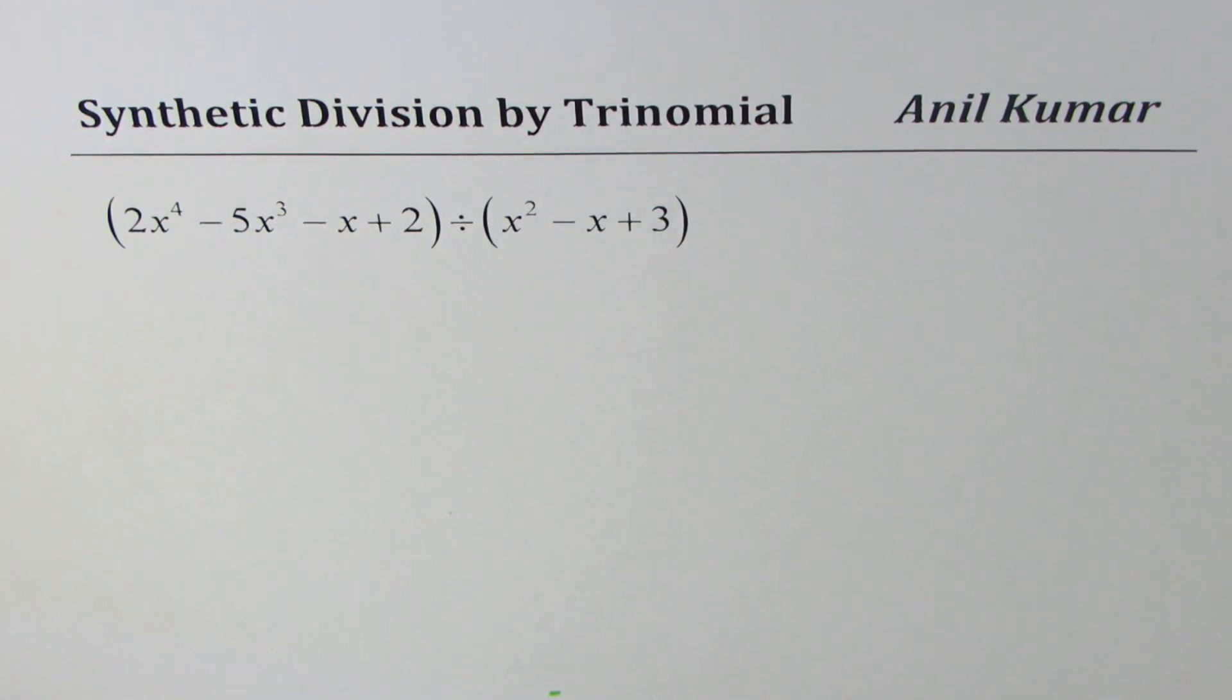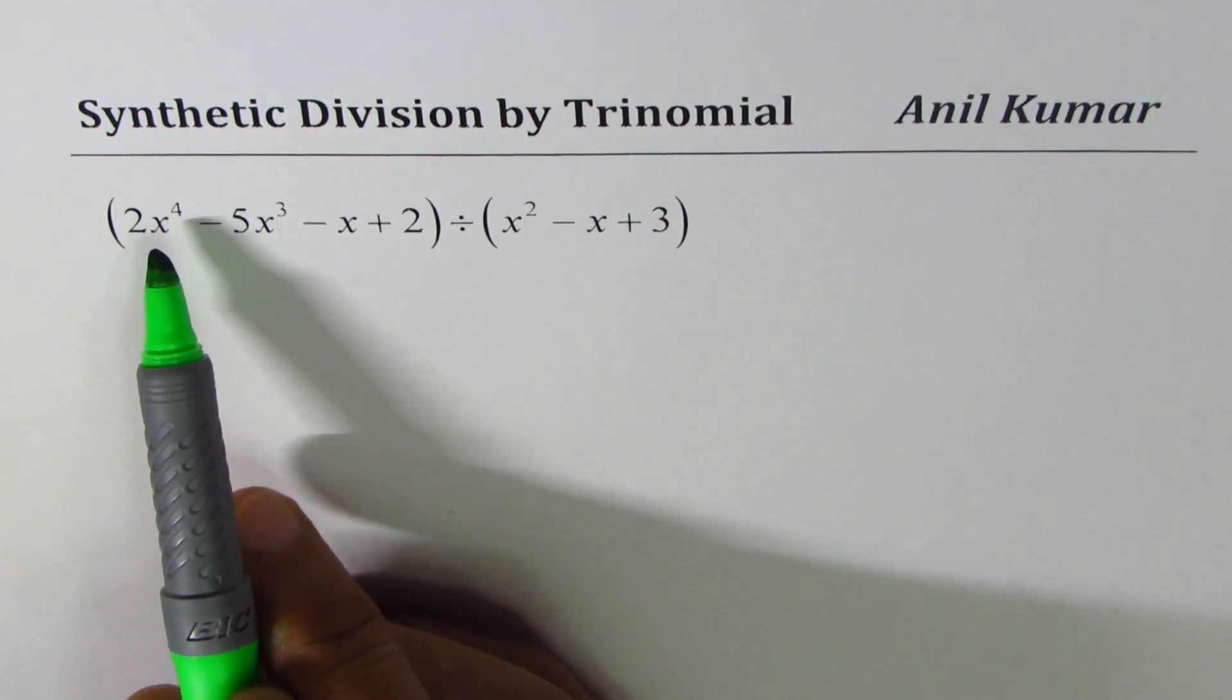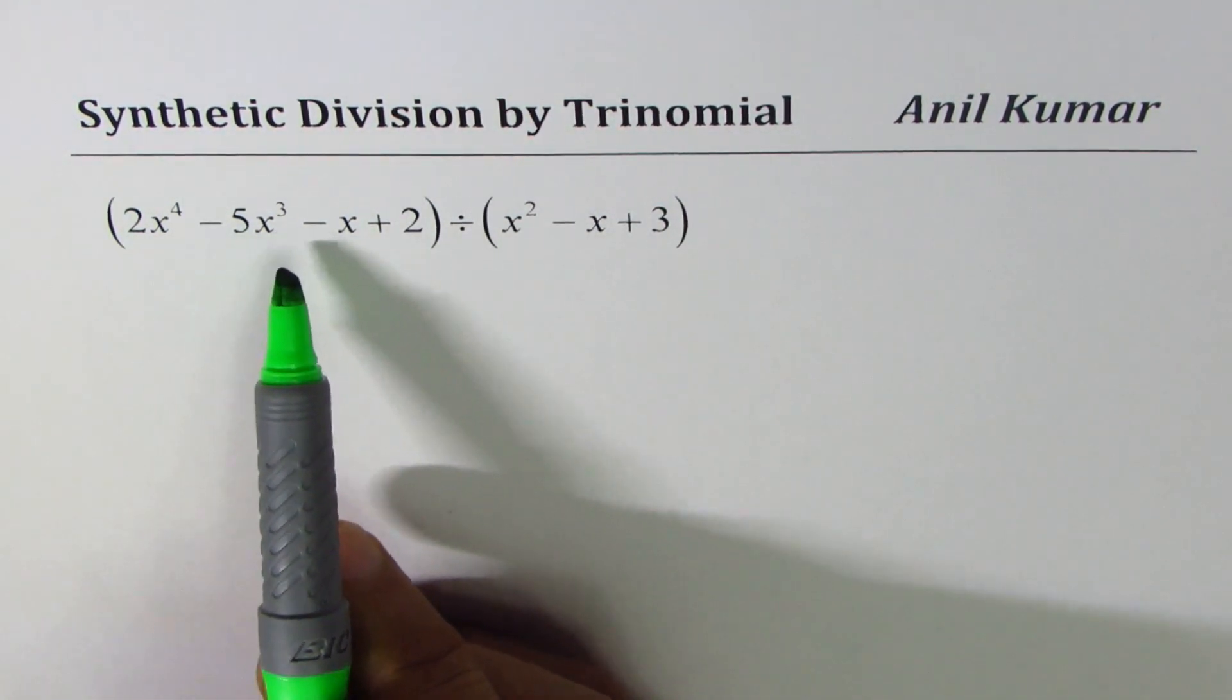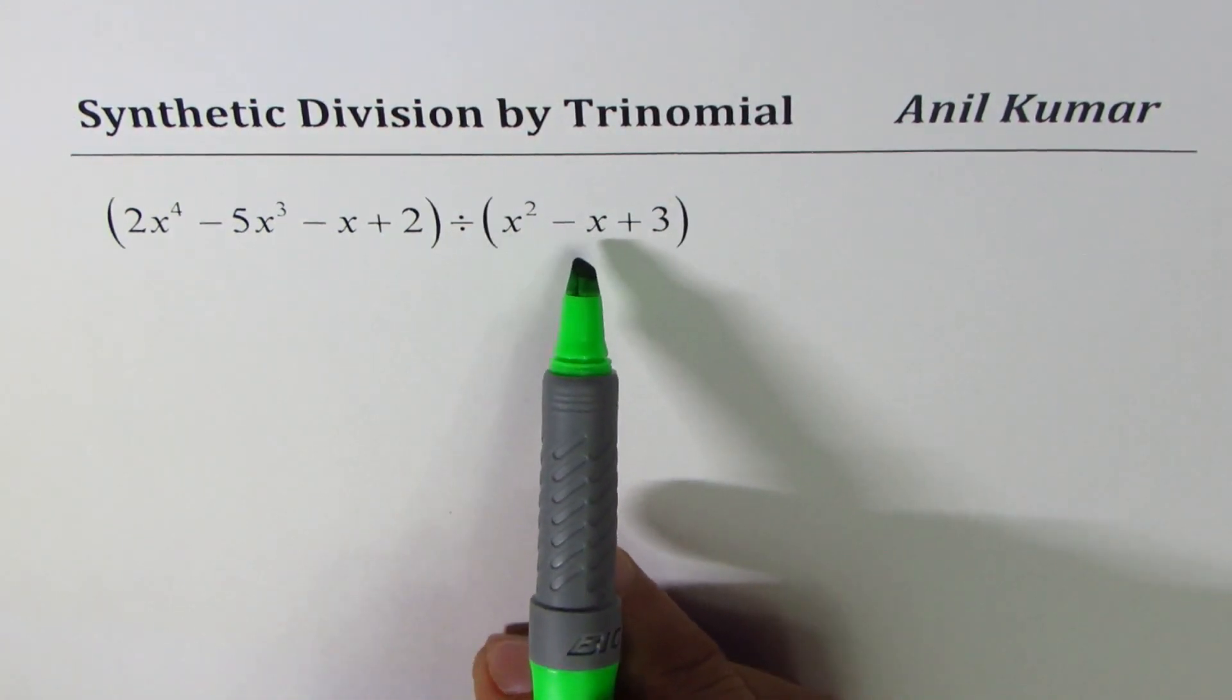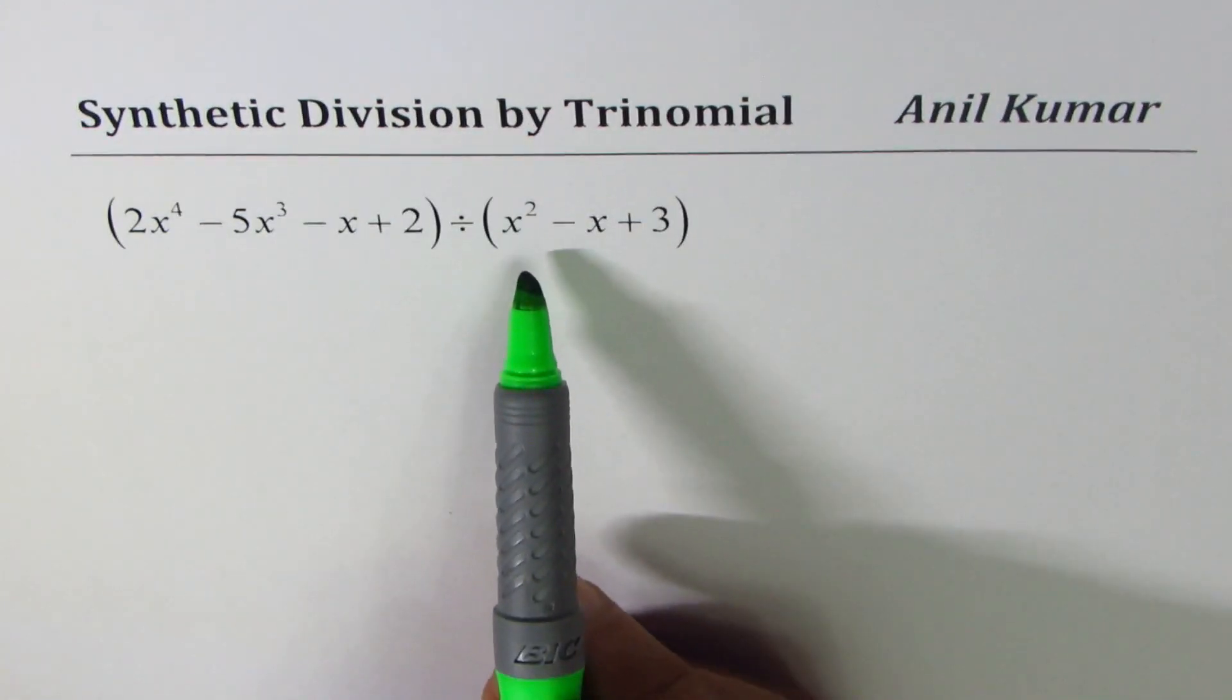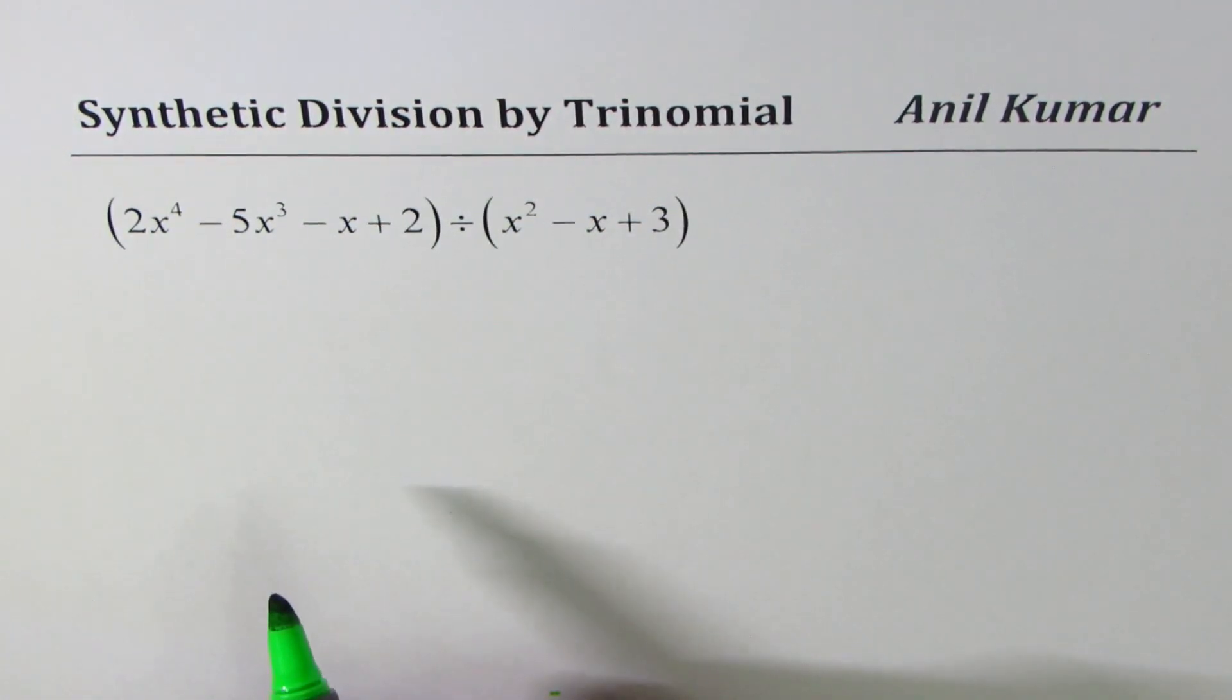We have already seen how synthetic division is used when dividing by a binomial. Here, let us divide 2x to the power 4 minus 5x cubed minus x plus 2 by x squared minus x plus 3. x squared minus x plus 3 is a trinomial. How to divide this using synthetic division?